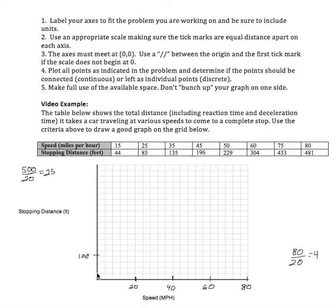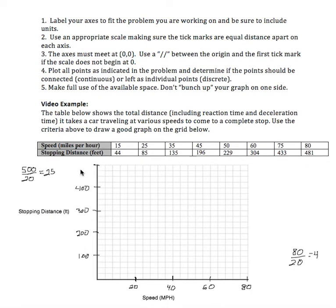Same thing on the vertical: 25, 50, 75, 100. The distance between marks on the horizontal axis does not have to be the same as on the vertical, but on a given axis the distance between each mark must be the same. So we'll go 200, 300, 400, and end at 500 — that fills our space very well.